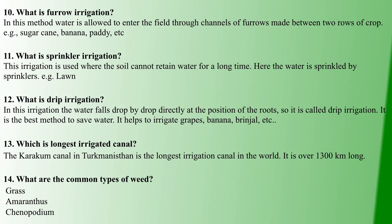Furrow irrigation uses channels of furrows lined in the field between two crops. Crops such as sugarcane, banana, and paddy use furrow irrigation.